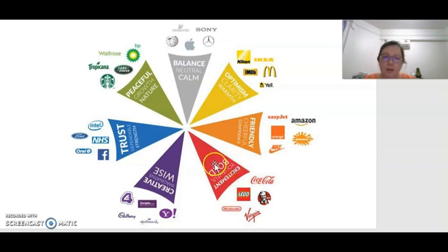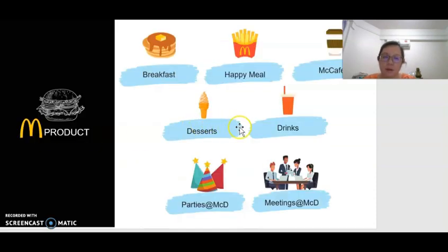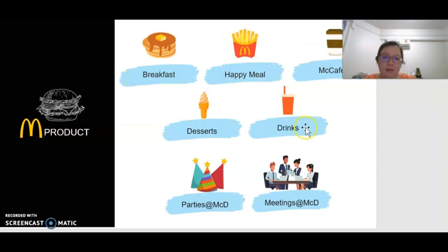The color a company uses is trying to get a share in the mind of the consumer. For example, Magdi here — they have different types of products: breakfast, happy meal, set meal, dessert, drinks, and catering for parties and meetings. So these are the different types of products that people are selling.